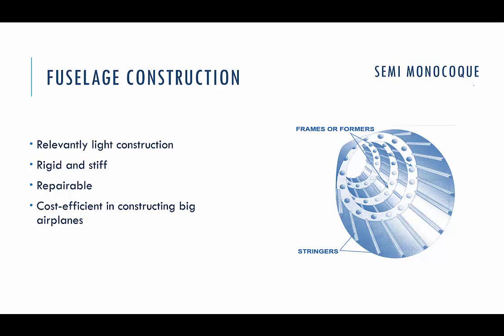Here comes semi-monocoque. This is the most popular type of fuselage construction in recent times, used in all modern aircraft — from lightweight aircraft like our Cessna to Boeings and Airbuses. The reason is that this type of construction inherits the positive features of both previous types — framework and monocoque.